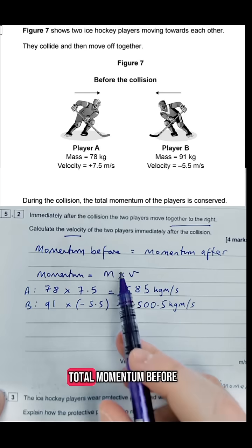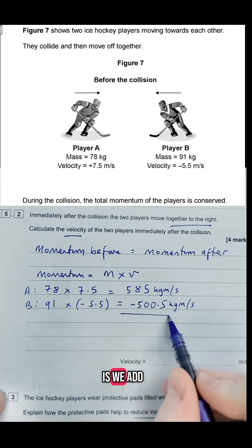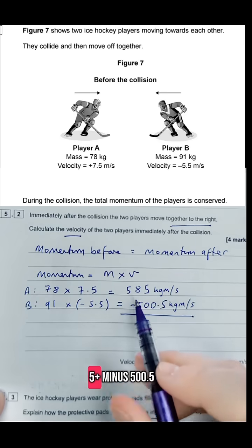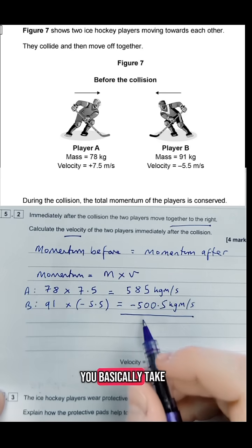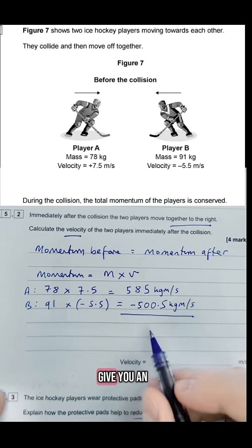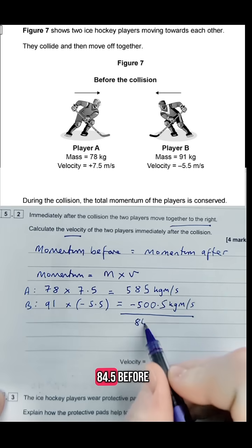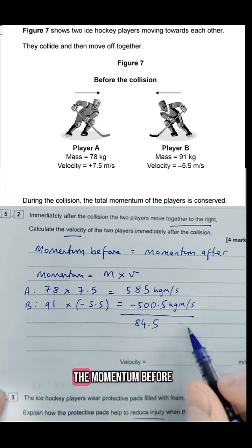Now because we're looking for the total momentum before, all we do is we add those together. So 585 plus minus 500.5, you basically take them away which is going to give you an overall momentum of 84.5 for the momentum before.